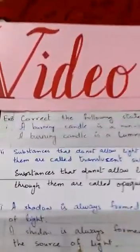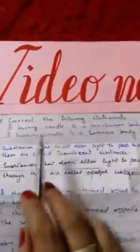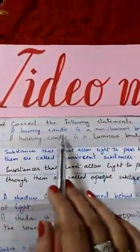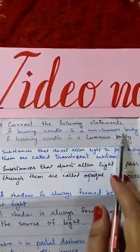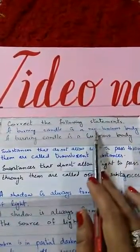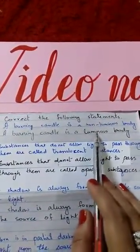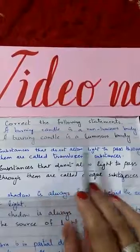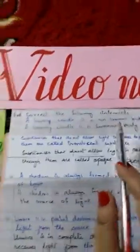So now we have the activity: correct the following statement. Statement 1 — a burning candle is a non-luminous body. But the correct answer is you will change only 'non-luminous' into 'luminous', because a burning candle gives us light.